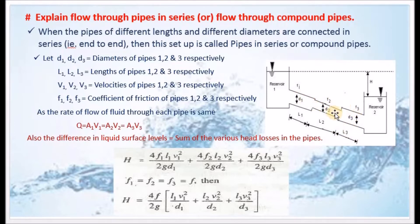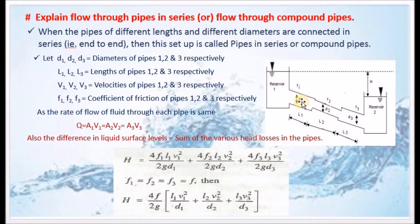When pipes of different lengths and different diameters are connected in series, end to end, this setup is called Pipes in Series or Compound Pipes. There is one flow with various lengths and various diameters. D1, D2, D3 are the diameters of pipes 1, 2, and 3 respectively.